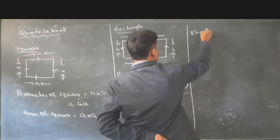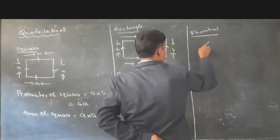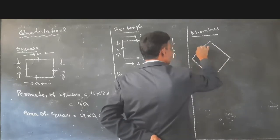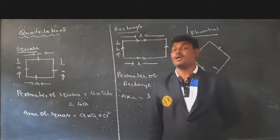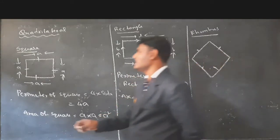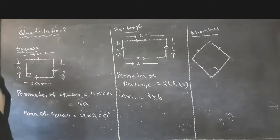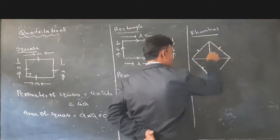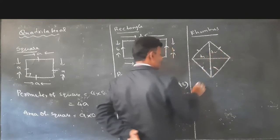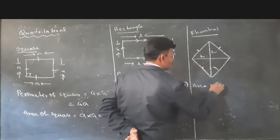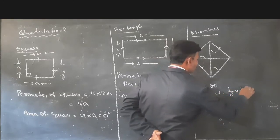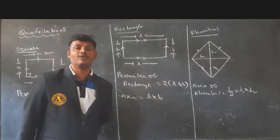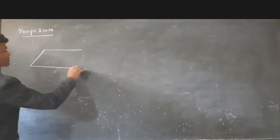Next, rhombus. In a rhombus also, the lengths of all sides are equal. In a square, all sides are equal and each angle is 90 degrees, but in a rhombus the angles are not 90 degrees. A rhombus has two diagonals d1 and d2. The area of a rhombus is half into d1 into d2.